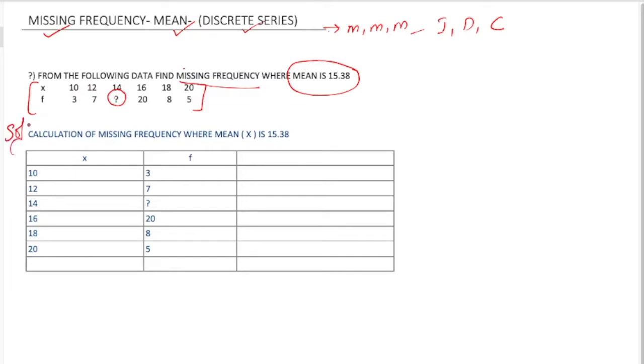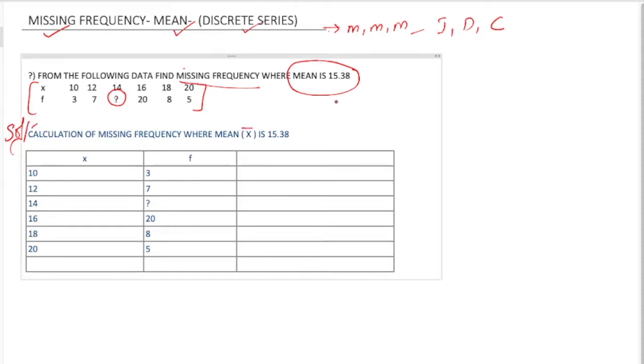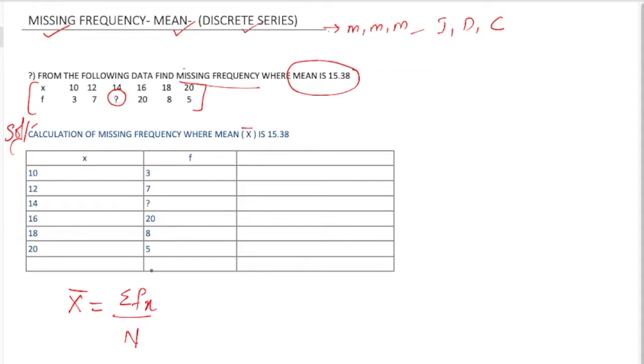Let's see the solution. Calculation of missing frequency where mean is 15.38. I've written as it is: x values and f values. The formula for mean is mean equals summation fx by n. N is the number of observations.